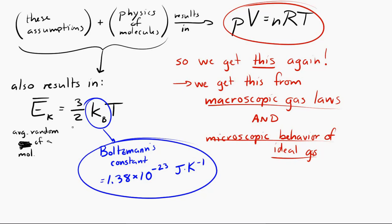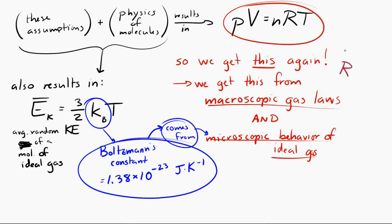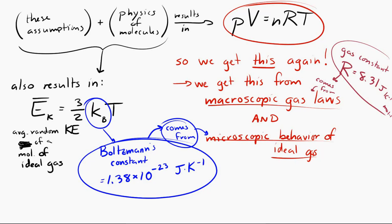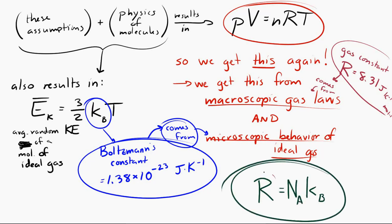Boltzmann's constant comes from the microscopic view, while the equation of state for an ideal gas from the macroscopic view contains R, the gas constant. K_B and R are actually closely related — the constant that links them is Avogadro's number, which connects microscopic to macroscopic. The ideal gas constant R is equal to Boltzmann's constant K_B times Avogadro's number N_A.